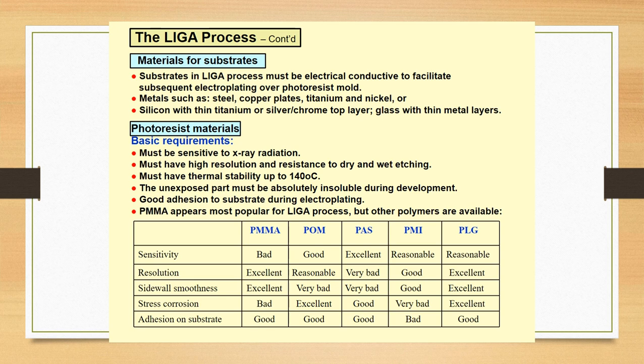The basic requirements are that the photoresist material must be sensitive to x-ray radiation, must have high resolution and resistance to dry and wet etching, must have thermal stability up to 140 degrees Celsius, the unexposed part must be absolutely insoluble during development, and good adhesion to the substrate during electroplating. PMMA appears most popular for the LIGA process, but other polymers can also be used. In the table, all other polymers have been compared regarding their properties.